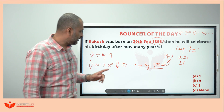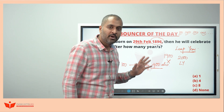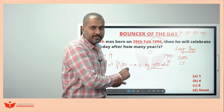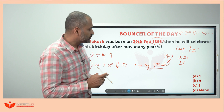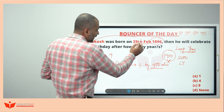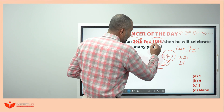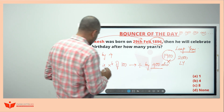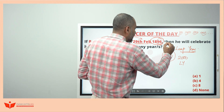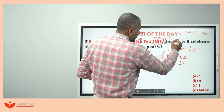To be a leap year, the number has to be divisible by 4, and if the year is a multiple of 100, it has to also be divisible by 400. Now, 1896: the last two digits are 96, which is divisible by 4, so 1896 is a leap year.